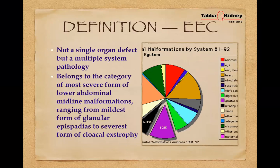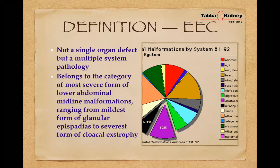If one thinks this involves only the urinary bladder or only the phallus, we are wrong. This is a very important point because, as we will see in later slides dealing with the skeletal system, the perineal system, and other genital organs, this is not a single organ defect but a complete multiple-system pathology. It belongs to the category of the most severe form of lower abdominal malformations.